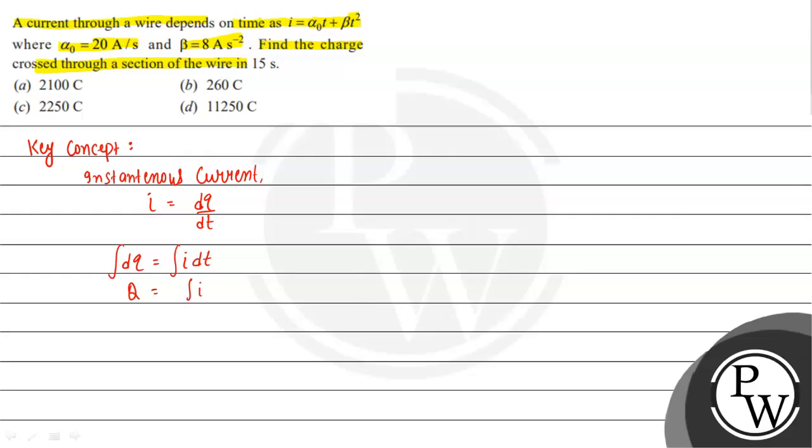If we integrate both sides, we will get the total charge passing through the section of wire. We will use this concept to solve this question. Given I = α₀t + βt², where α₀ = 20 ampere per second and β = 8 ampere per second squared.